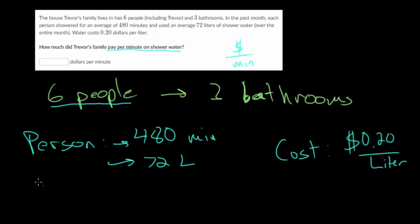We can figure out the cost per person for their month of shower usage, since they're using 72 liters and it costs 20 cents a liter. We'll just do a little bit of unit conversion. 72 liters times $0.20 per liter, and liters cancel out in the top and bottom.